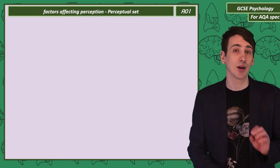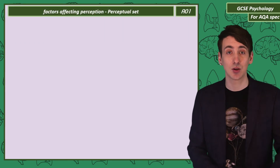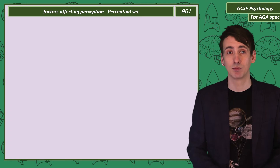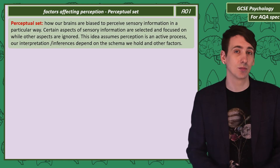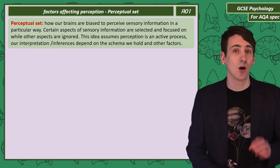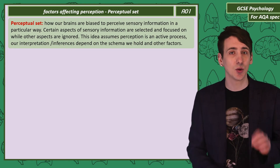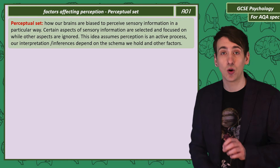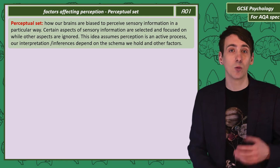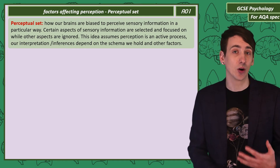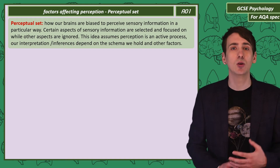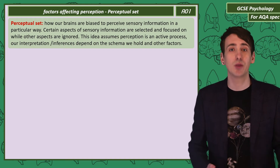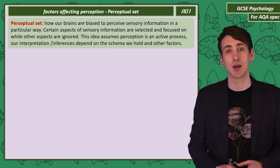Let's start by explaining the term perceptual set. Our brains are thought to be biased in the way they perceive information. As sensory information is detected, we focus on some bits of information and ignore other parts. We have a group or a set of expectations based on previous experience that we use to make inferences, altering our perception.